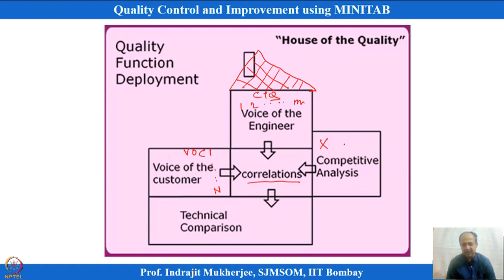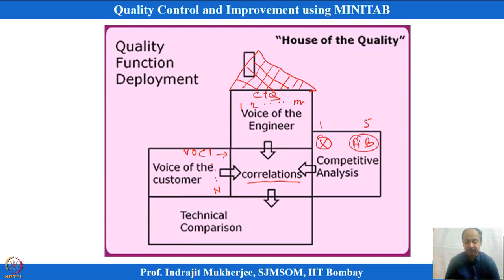If our company is X and competitors are A or B, we can see where we stand on a scale of 1 to 5. If we are rated lowest and competitors are rated highest for a particular voice, that is a concern — the way we are addressing that voice is not sufficient and we need to improve, following what A and B are doing.